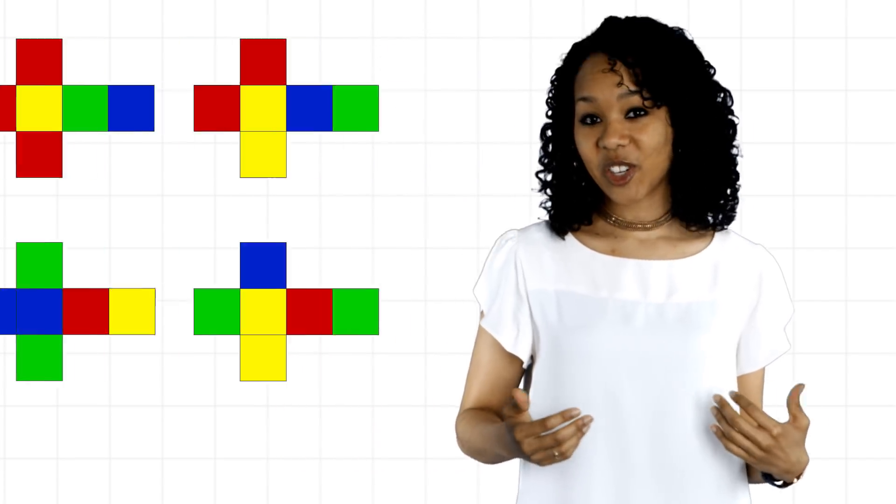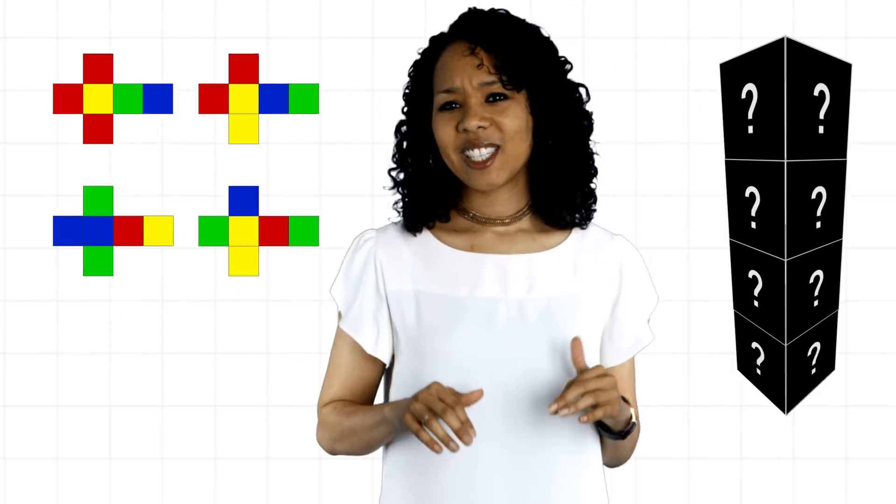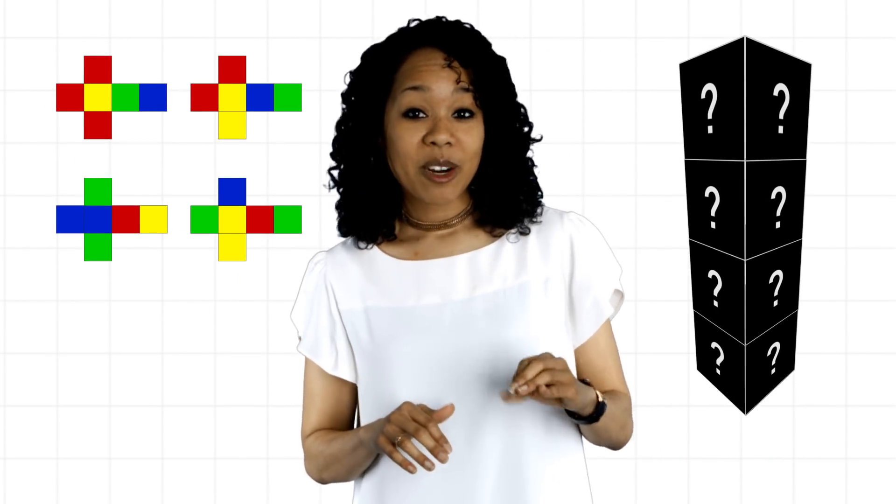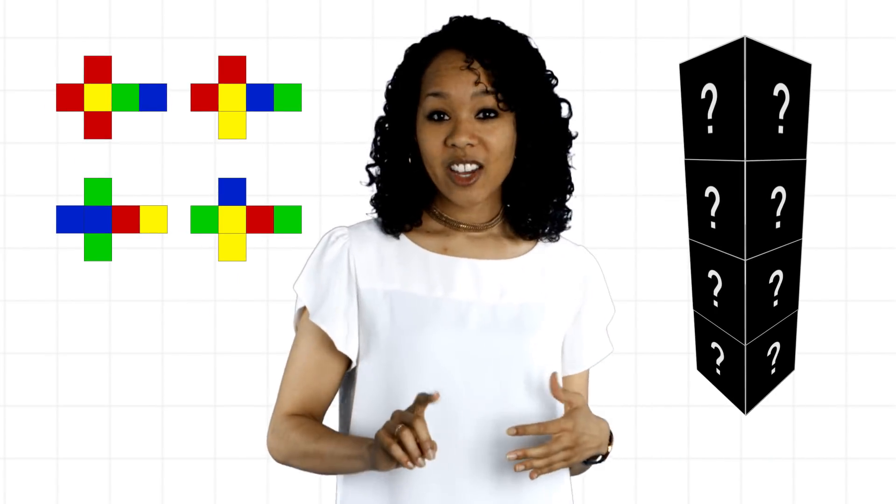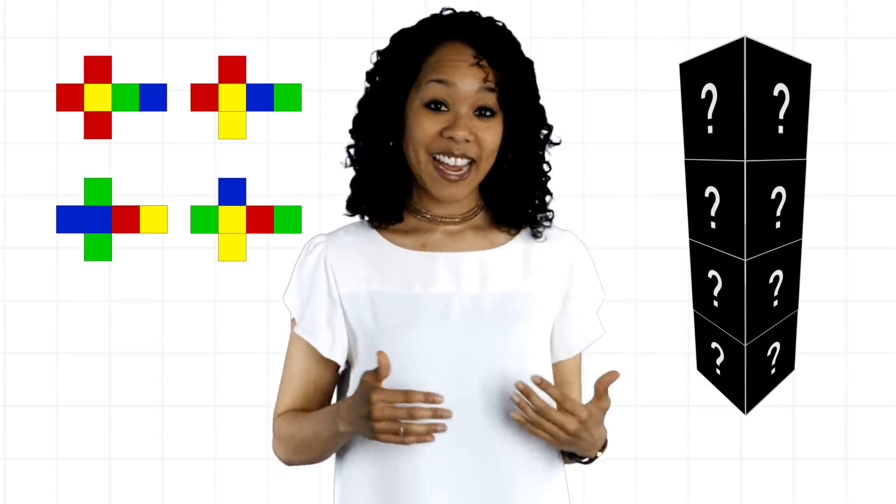Imagine you have four cubes whose faces are colored red, blue, yellow, and green as shown. Can you stack these cubes so that each color appears exactly once on each of the four sides of the stack?